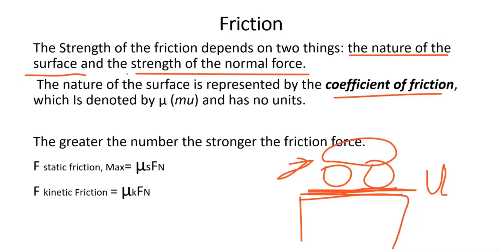The coefficient of friction does not have a unit. The greater the number, the stronger the friction force. For static friction, which has a higher coefficient, the car is packed and the snow grips the tires more. When the car is in motion, the tire breaks the ice as it drives out. So static friction is μs × Fn, and kinetic friction is μk × Fn.